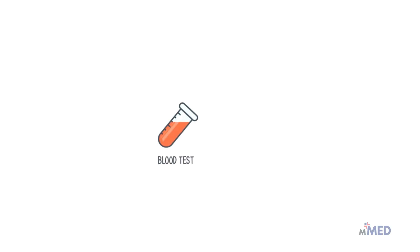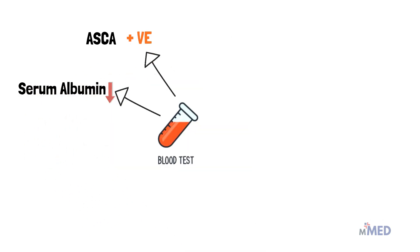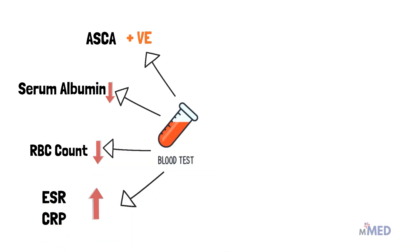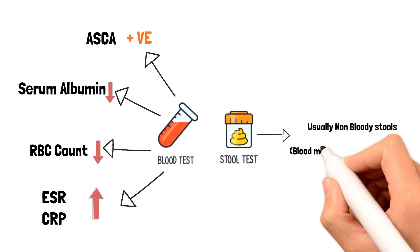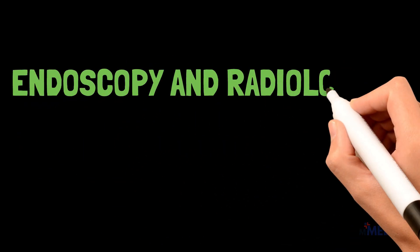During lab investigation in Crohn's disease, the blood test will be positive for ASCA, and sometimes show low serum albumin due to impaired digestion, a low RBC count, and increased ESR and CRP levels indicating inflammation. A stool sample may show blood in stools.